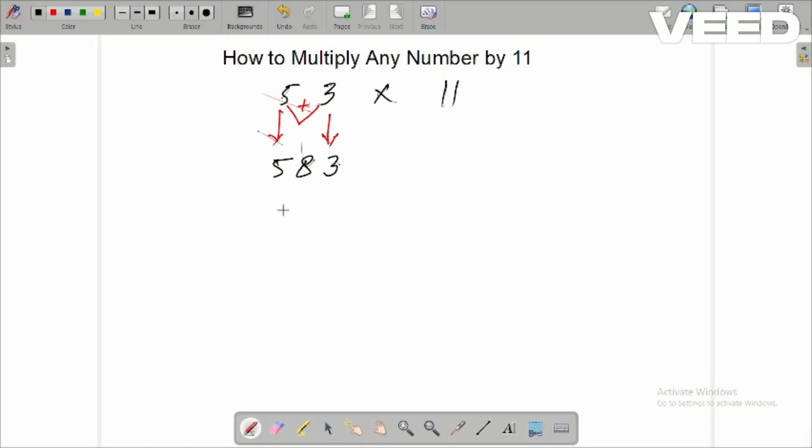Let's take another example, 72 times 11. So first digit as it is. Take the sum of two digits, 7 plus 2, 9. Write 9 after that, and then the last digit as it is.